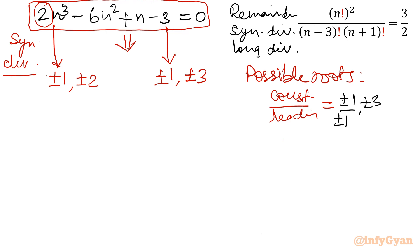So I will write plus minus 1 over plus minus 1, plus minus 3 over plus minus 1. Then for plus minus 2, plus minus 1 over plus minus 2 and plus minus 3 over plus minus 2.